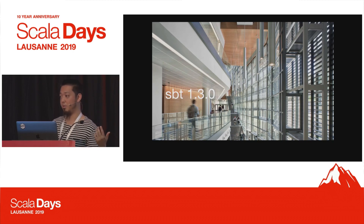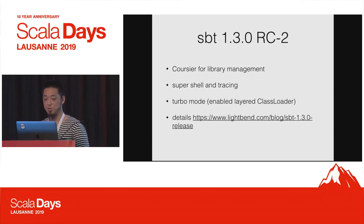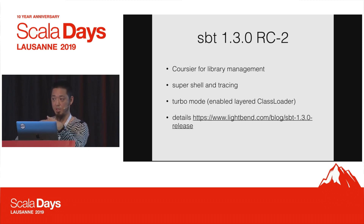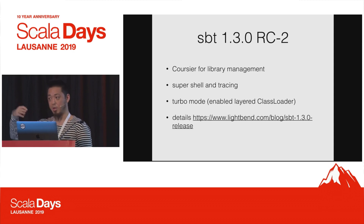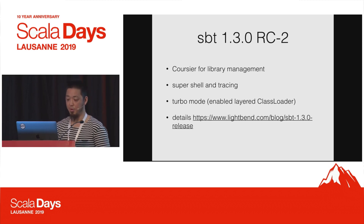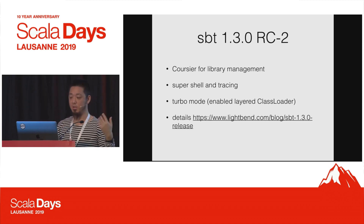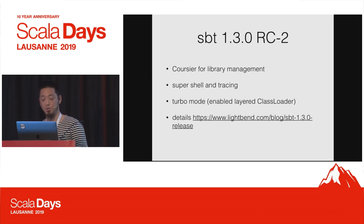Looking ahead to SBT 1.3 — RC2 is already out. One of the main features is Coursier as default, which is great. There's also Supershell, which displays currently executing tasks, so if you're doing parallel processing SBT now tells you which tasks are being processed in parallel. Then there's turbo mode, which enables layered class loaders — previously only the Scala standard library was cached, but now with turbo mode the class loader for library dependencies is also cached. This makes test and run tasks start up really fast.